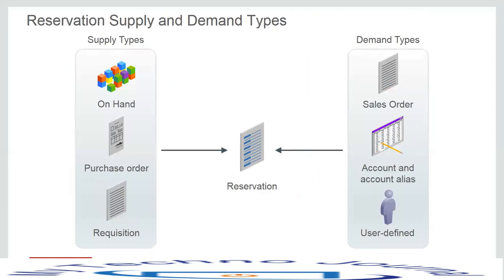A reservation is an association or link between a supply document and a demand document. Examples of supply documents include on-hand, purchase order, requisition, transfer order, and work order. Examples of demand documents include sales order, movement request, cycle count, account alias, shipment request, or user-defined demand document.